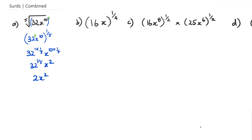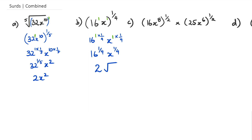The next one: we've got 16x to the power of one quarter. Remember that 16 has a power of 1 and x has a power of 1, so this is going to be 16 to the power of 1 times one quarter, and the same with the x — x to the power of 1 times one quarter. So we have 16 to the power of one quarter, which is 2, and x to the power of one quarter. I can't really do anything with it, so I'm going to leave it as the fourth root of x.